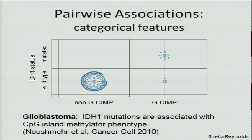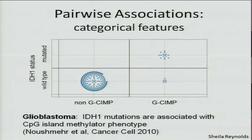Let me give a few examples. One is IDH1 status — whether it's mutated or non-mutated — which is related to the glioma CpG island methylator phenotype. This is shown graphically where every dot is one sample. The box is completely empty, meaning that if IDH1 is mutated, there are no samples that are not CIMP. That's a pretty strong relationship — an example of a categorical association.